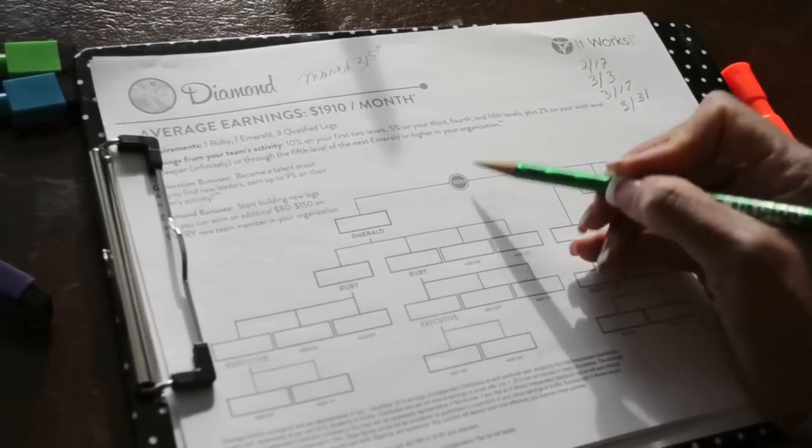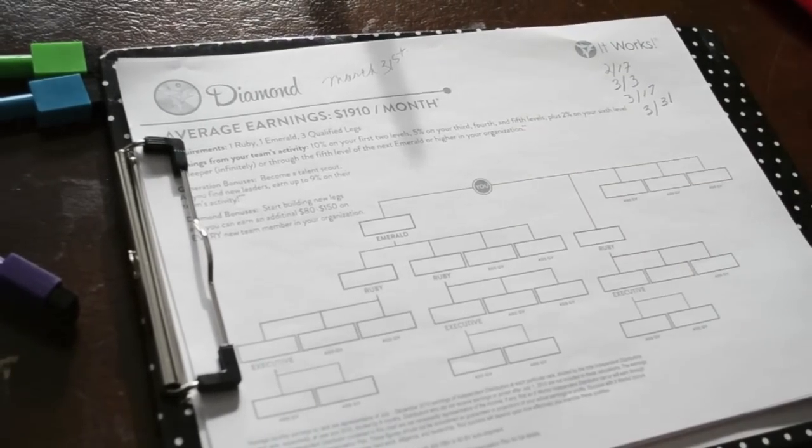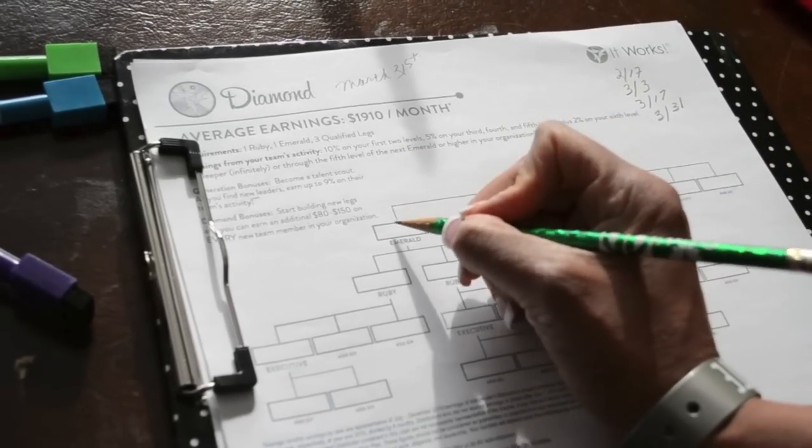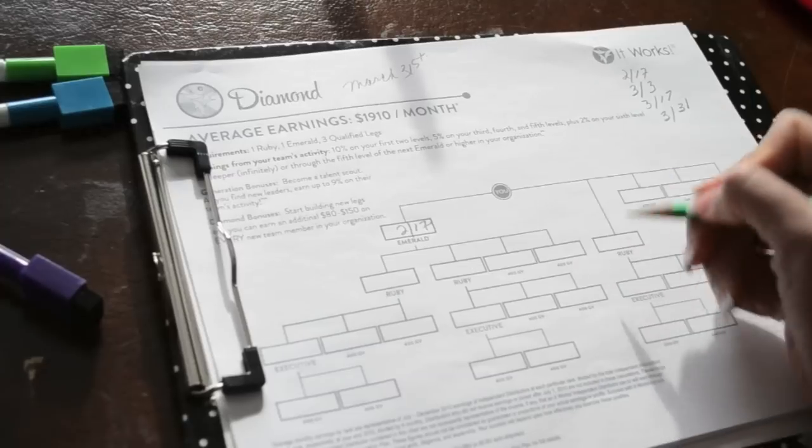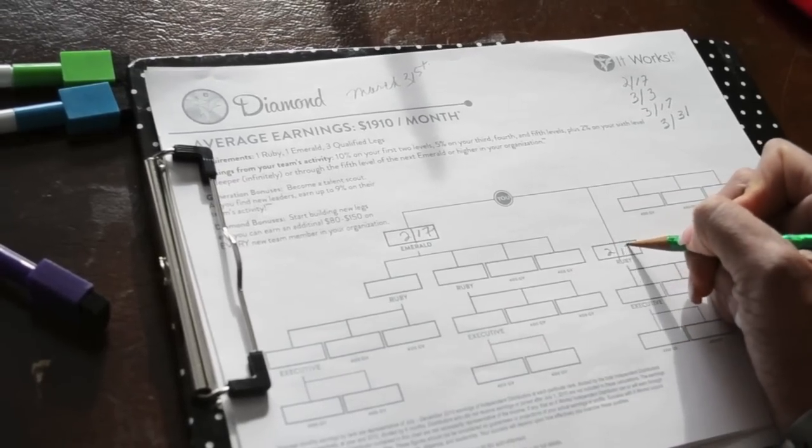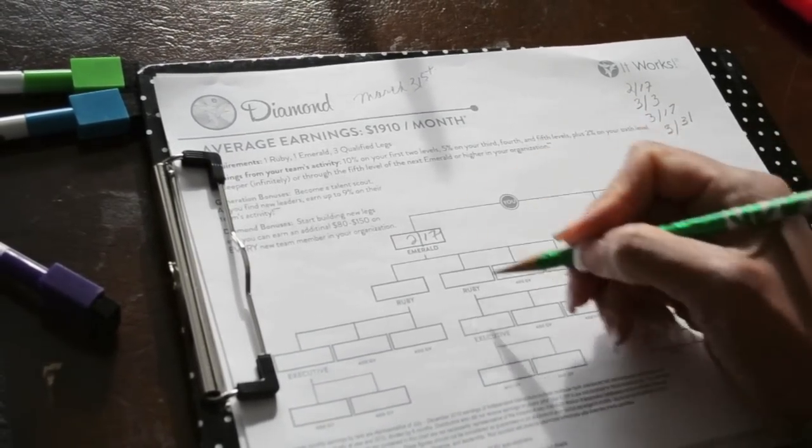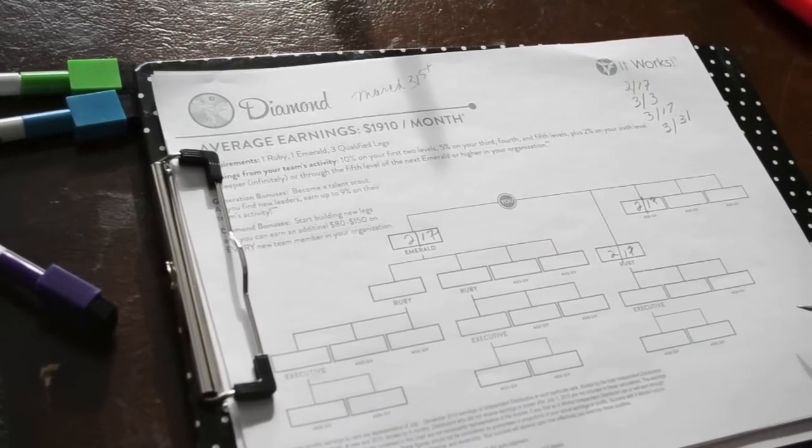So if it's just you and you're looking to build a team to diamond in the next eight weeks, you need to personally sponsor three people by February 17th. So we're going to put those three people into these blocks. Your goal is to sponsor at least three people by February 17th.